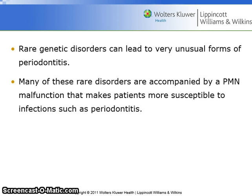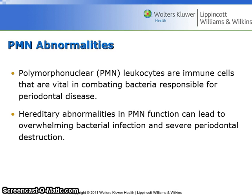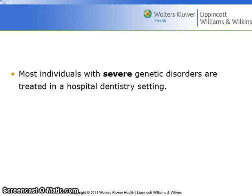Rare genetic disorders can lead to very unusual forms of periodontitis. Many of these rare disorders are accompanied by a PMN malfunction that makes patients more susceptible to infections such as periodontitis. PMN, or polymorphonuclear leukocytes, are immune cells that are vital in combating bacteria responsible for periodontal disease. Hereditary abnormalities in PMN function can lead to overwhelming bacterial infection and severe periodontal destruction. Most individuals with severe genetic disorders are treated in a hospital dentistry setting.